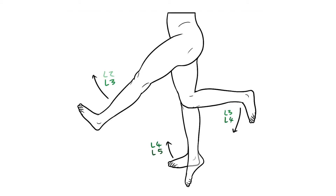Posteriorly we have a similar distribution of myotomes, just starting two nerve roots further down. So hip extension is controlled by L4 and L5. L5 and S1 control knee flexion, and ankle flexion is part of the S1 to S2 myotomes.